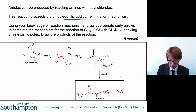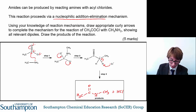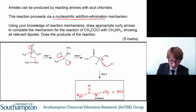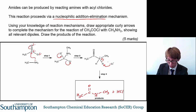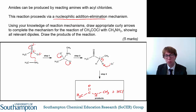So the mechanism proceeds as follows: the amine nucleophile attacks the electron-deficient carbon in the acyl chloride molecule, breaking the pi bond between the carbon and the oxygen. The electrons then come back down in the next step, kicking out the stable leaving group — the chloride ion. Then the chloride ion removes the proton from the intermediate structure, and you form the final product.